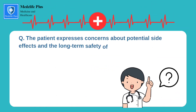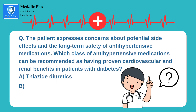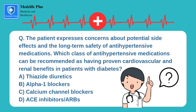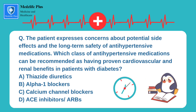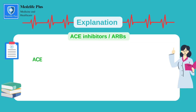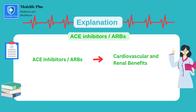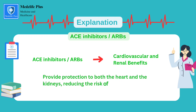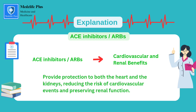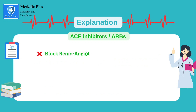Question number 7: the patient expresses concerns about potential side effects and the long-term safety of antihypertensive medications. Which class of antihypertensive medications can be recommended as having proven cardiovascular and renal benefits in patients with diabetes? A. Thiazide diuretics. B. Alpha-1 blockers. C. Calcium channel blockers. D. ACE inhibitors and ARBs. The right option is D, that is ACE inhibitors and ARBs. These are the class of antihypertensive medications recommended as having proven cardiovascular and renal benefits in patients with diabetes, providing protection to both the heart and the kidneys.